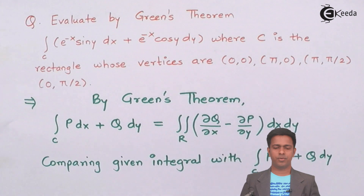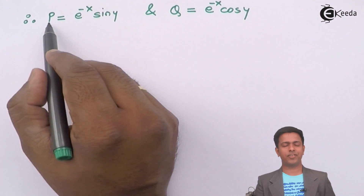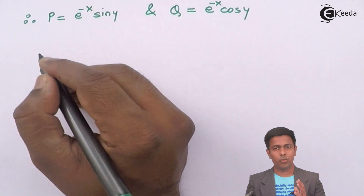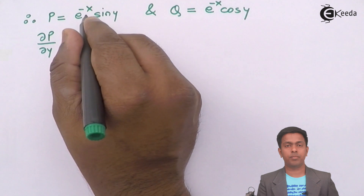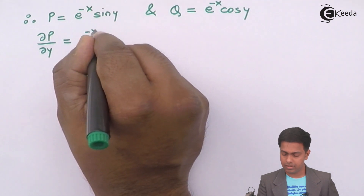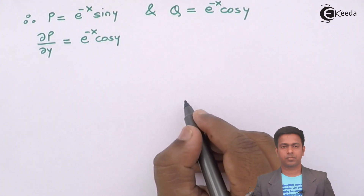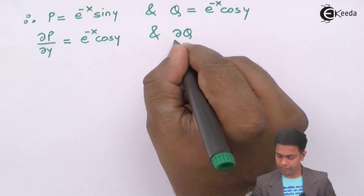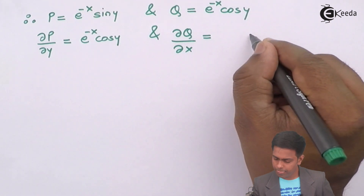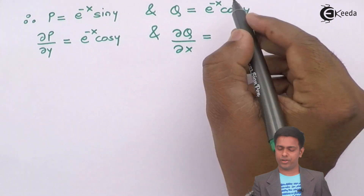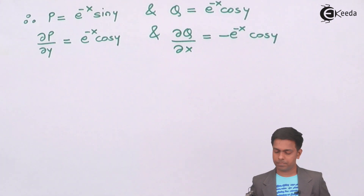Now we have P and Q. To find ∂Q/∂x, I'll differentiate Q with respect to x partially, and to find ∂P/∂y, I'll differentiate P with respect to y partially. So ∂P/∂y: e to the power minus x is constant, and the derivative of sine y is cos y. For ∂Q/∂x: cos y is constant, and the derivative of e to the power minus x is e to the power minus x times minus 1.